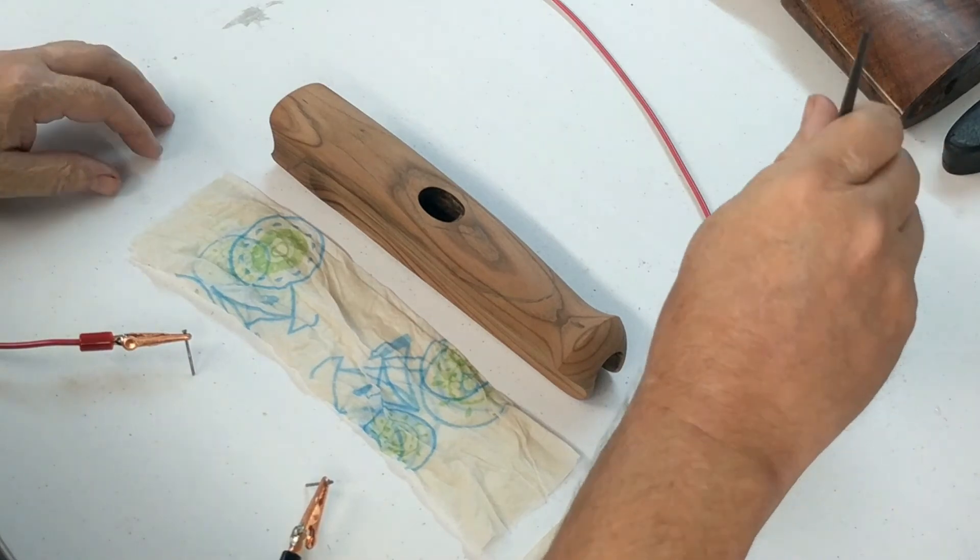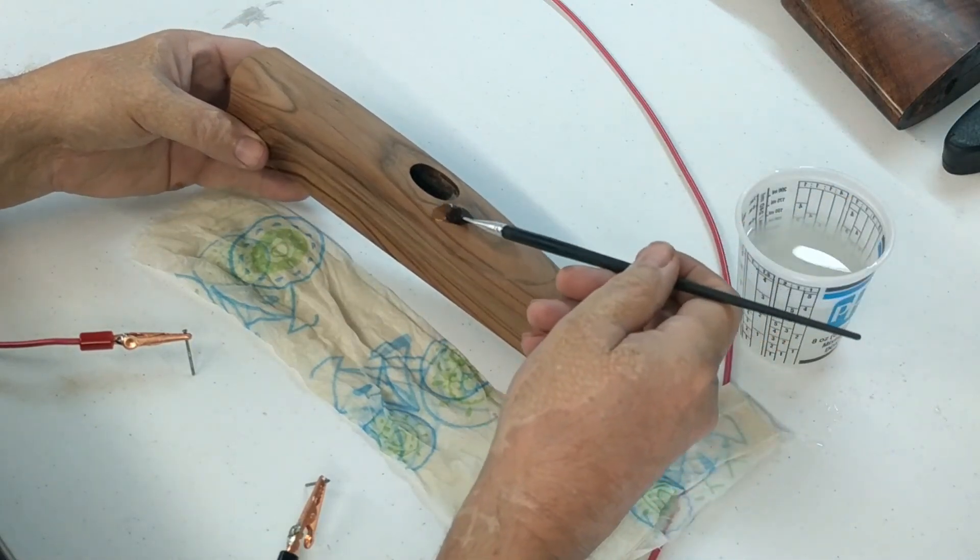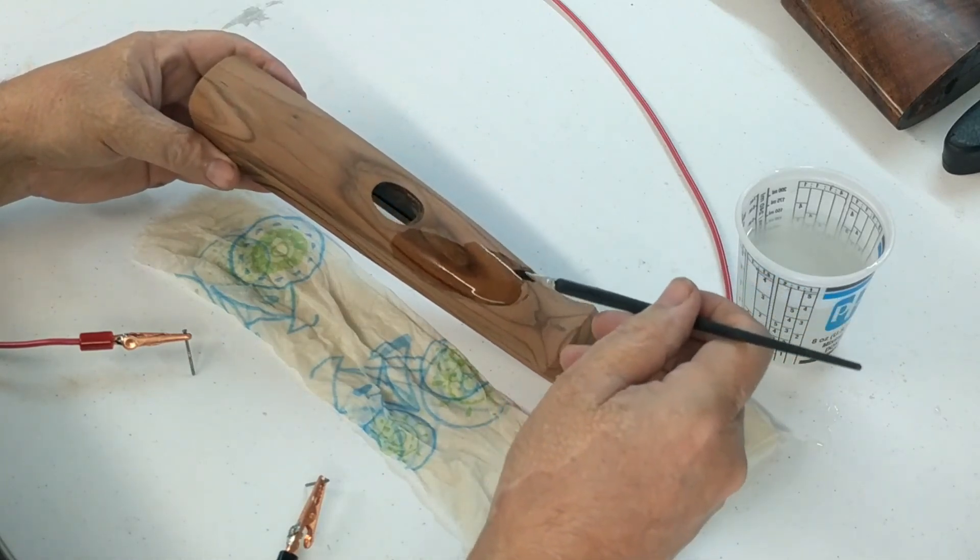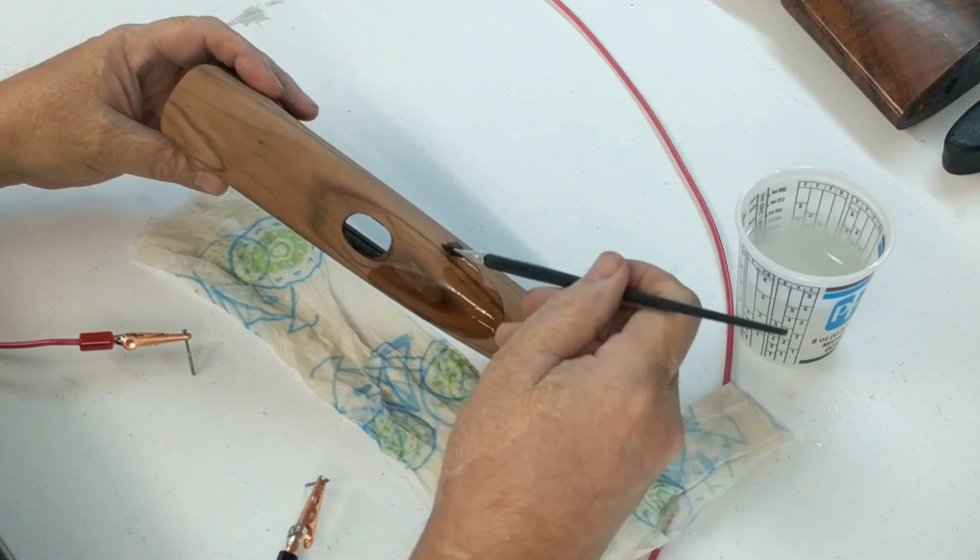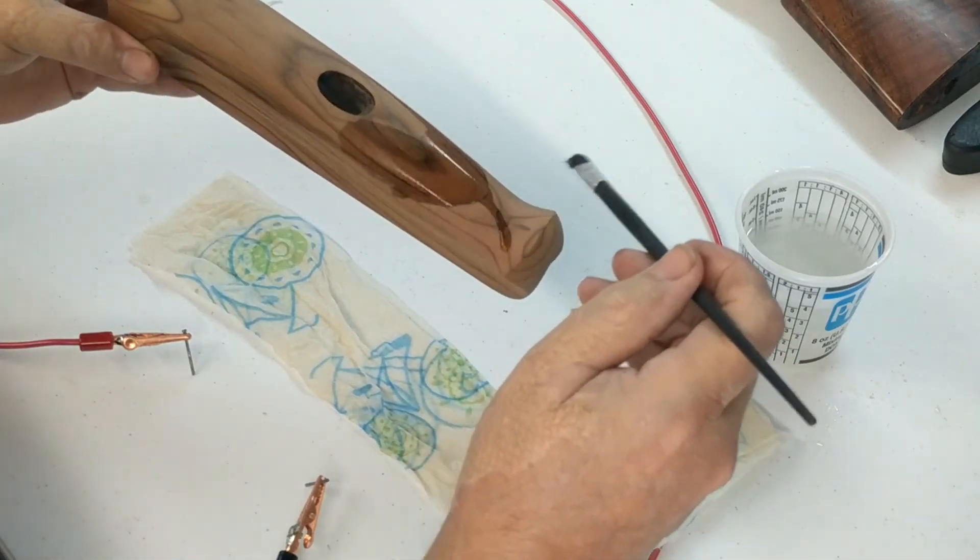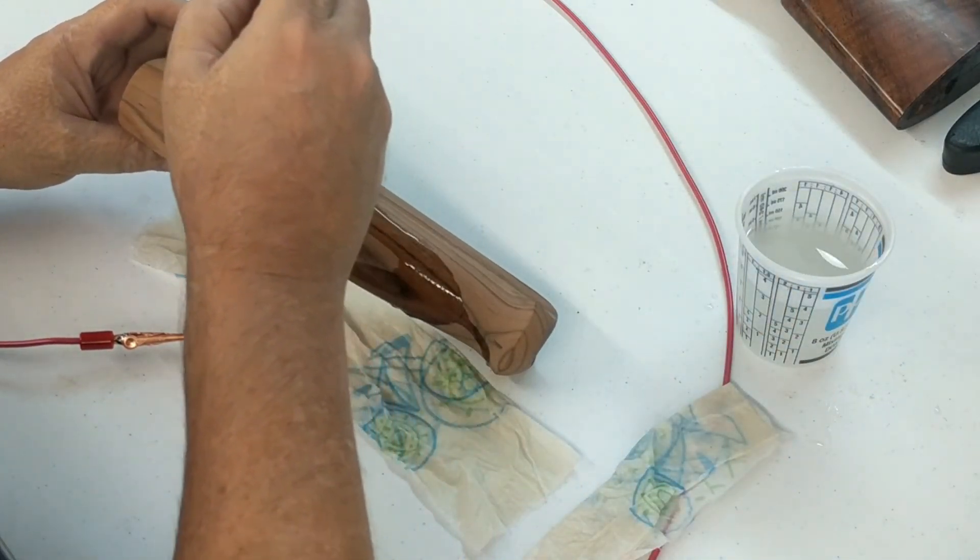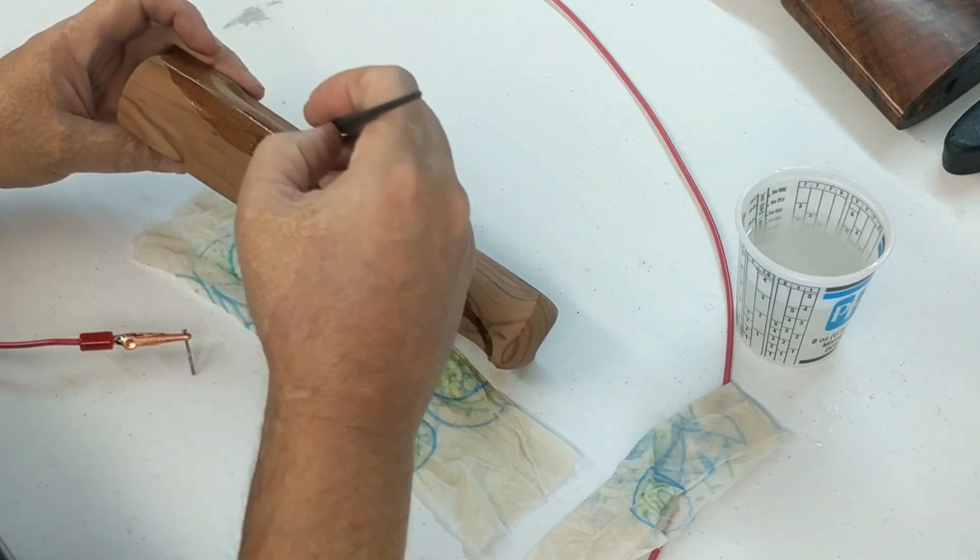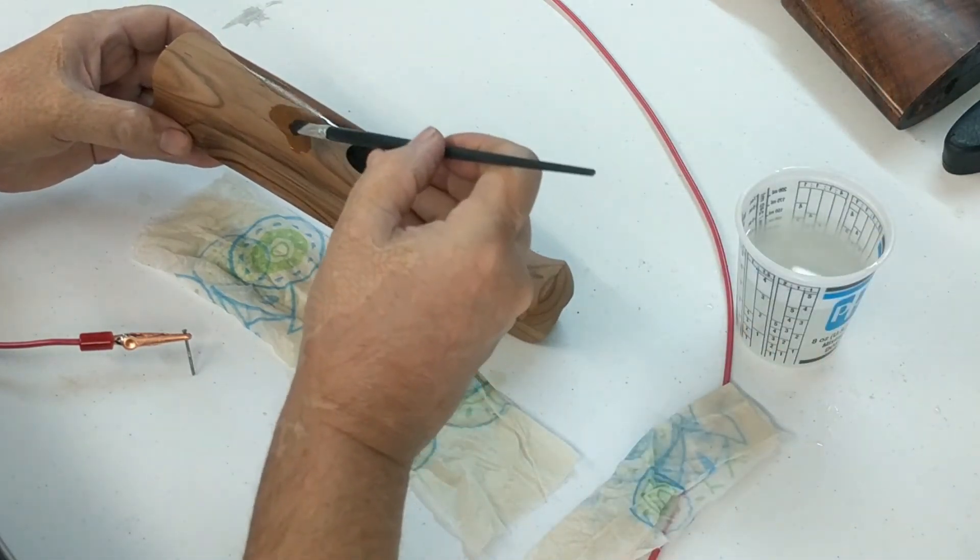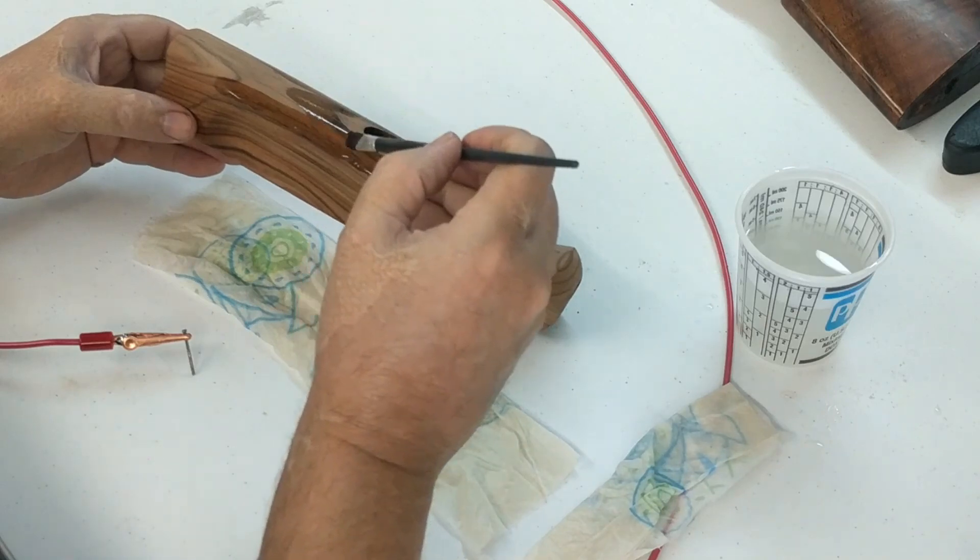First thing I'll do is since I'm not doing the entire area of this forend I have lightly penciled in some of the areas that I want to do and I'm going to try to keep the solution confined somewhat to those areas just so I don't get a lot of spill over. There will be. There's no way to avoid it without masking it off and that brings its own problems. But I will soak this once and I'll go back and I will be reapplying as needed.